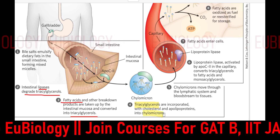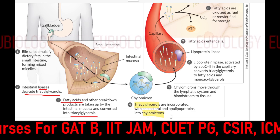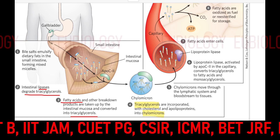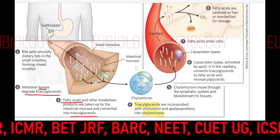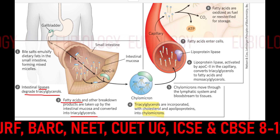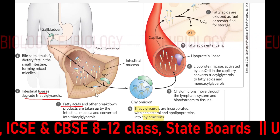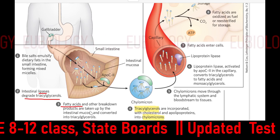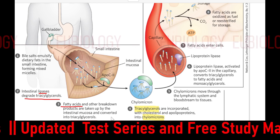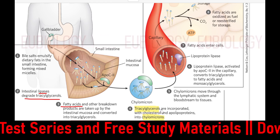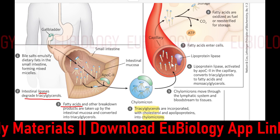That surrounding protein is called chylomicron protein. It is incorporated with cholesterol and apolipoprotein — apolipoprotein meaning a protein separate from the lipid. It will surround the triglycerol and this complete structure is known as a chylomicron. Now it is ready to go into the bloodstream. It is absorbed from the villi, enters the mucosal cell, is converted again into triglycerol, and then via the lacteals it enters the bloodstream.